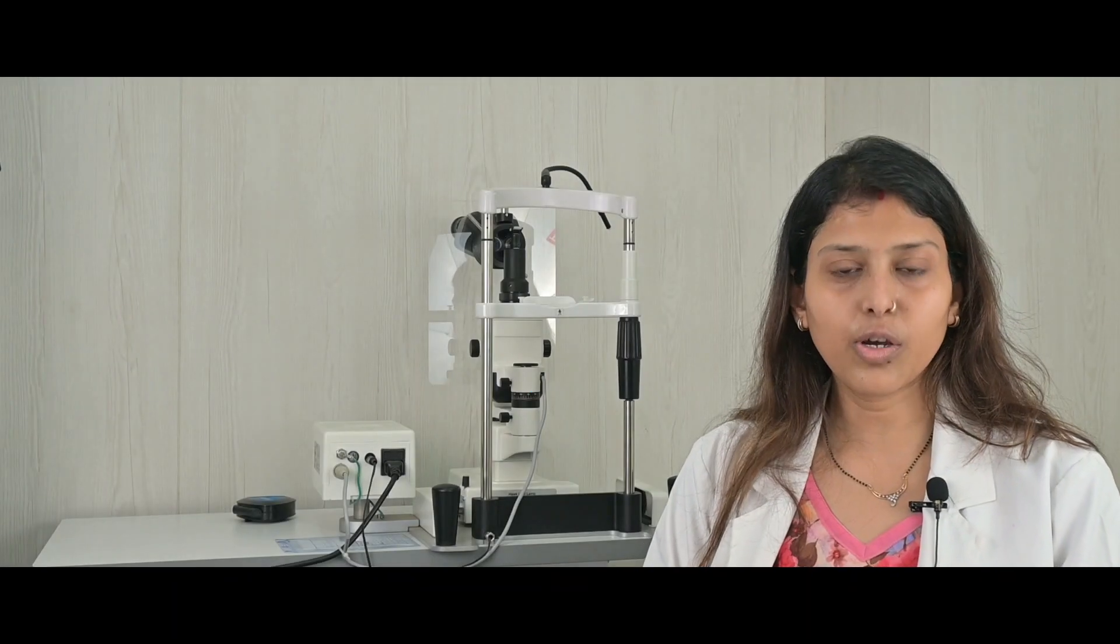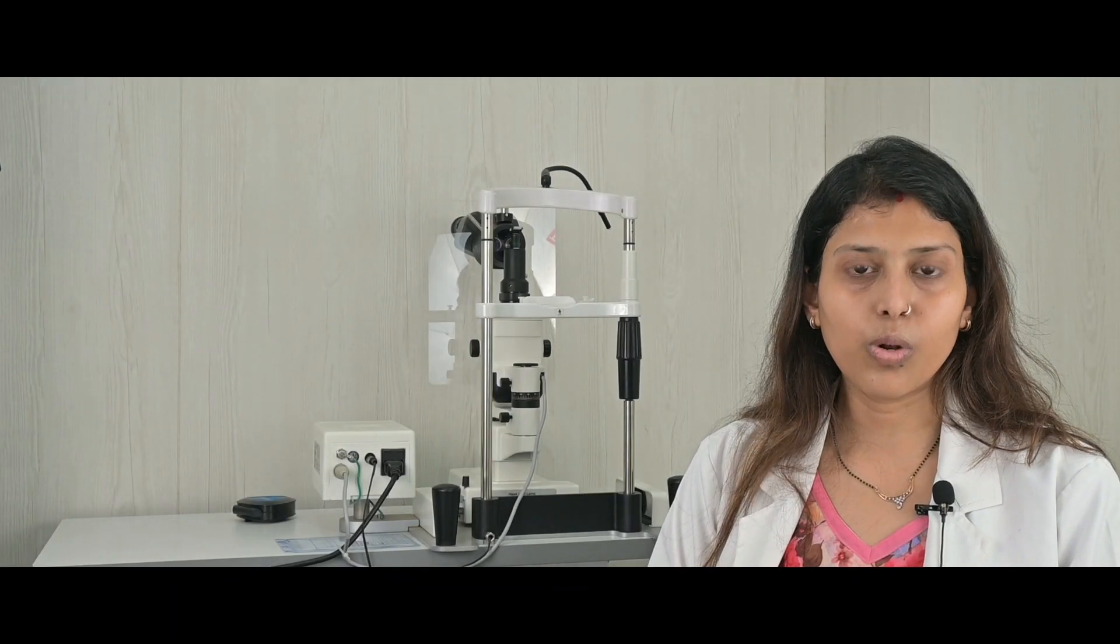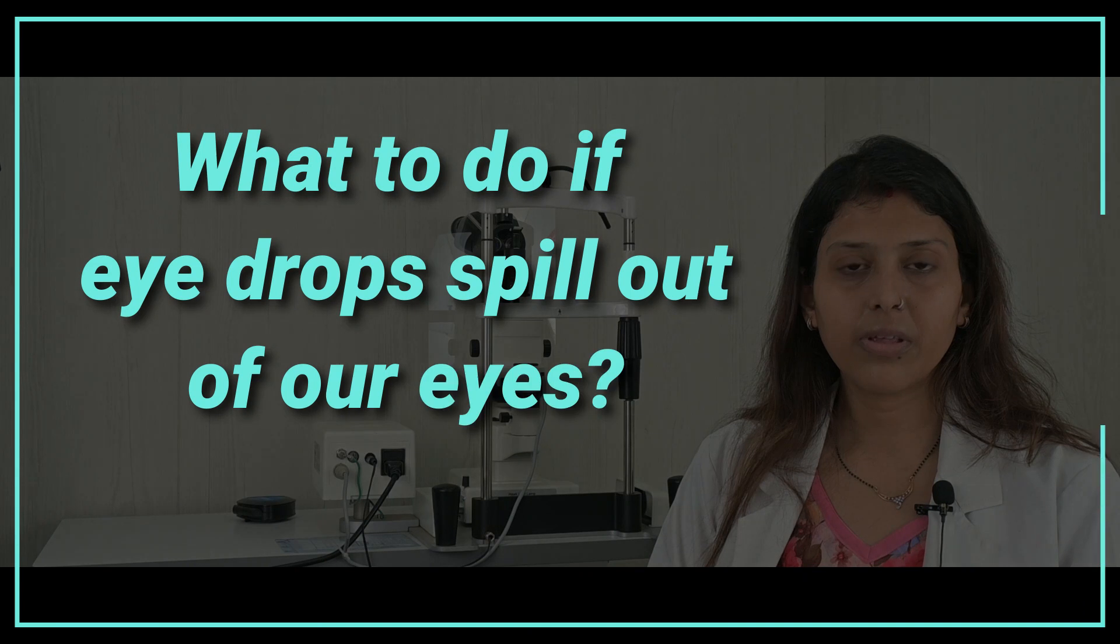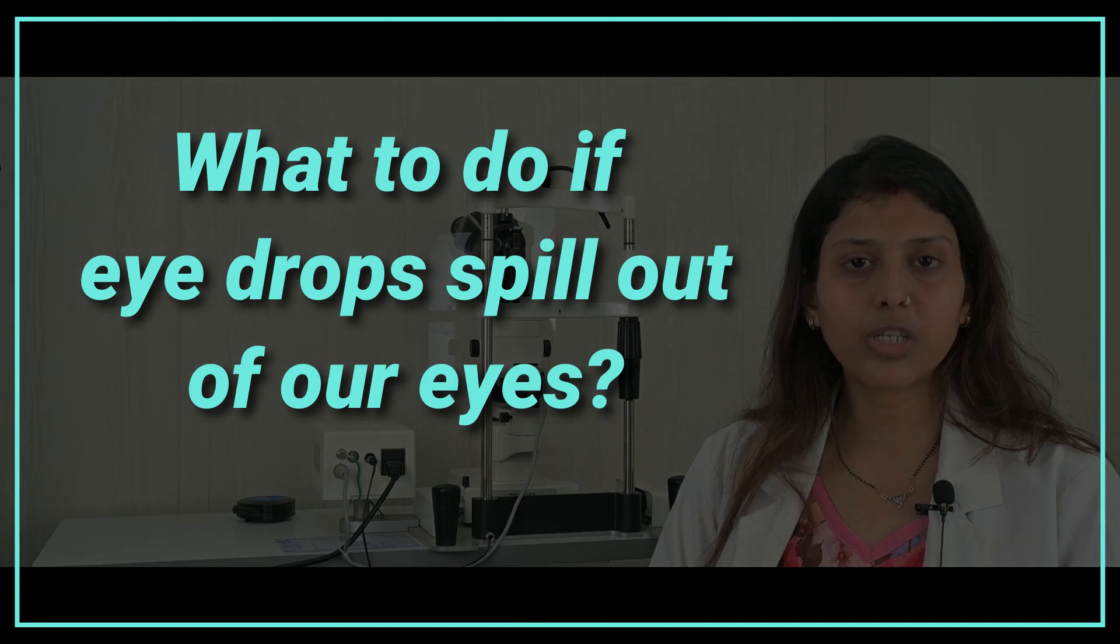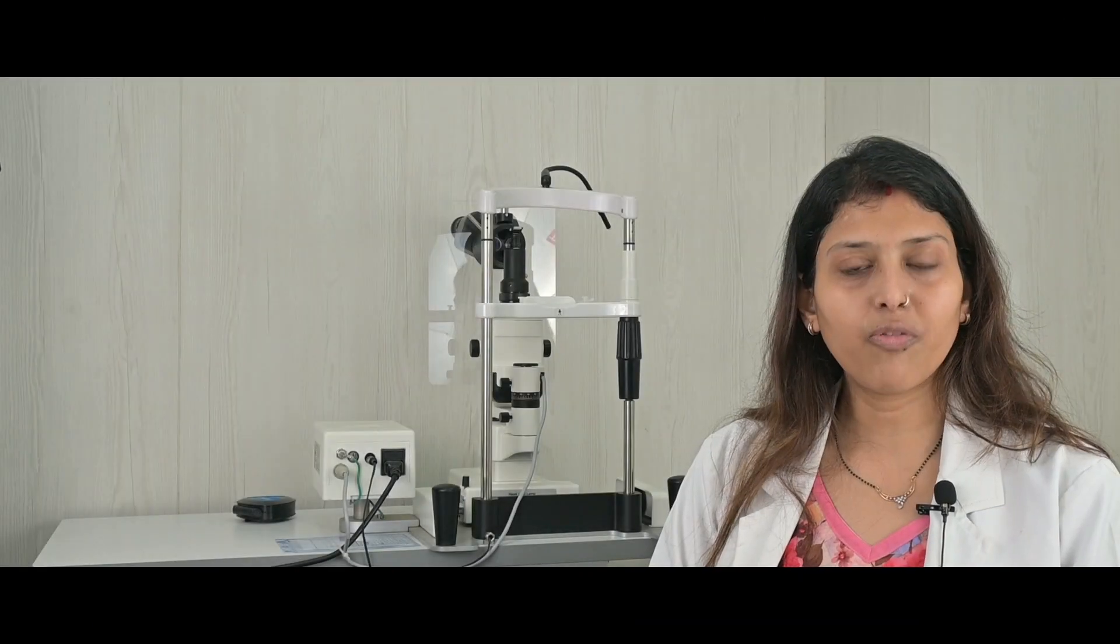So the capacity of the eye is even to hold less than one drop. Whenever we put one drop, some of it spills out of the eye. So what you can do is you just close your eye, you dab it with a tissue paper and then you leave it.